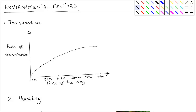In this lesson we look at the environmental factors that affect the rate of transpiration. Environmental factors are due to the surrounding conditions determined by the prevailing weather conditions. These factors include temperature, humidity, wind, light intensity, atmospheric pressure, and water availability in the environment.